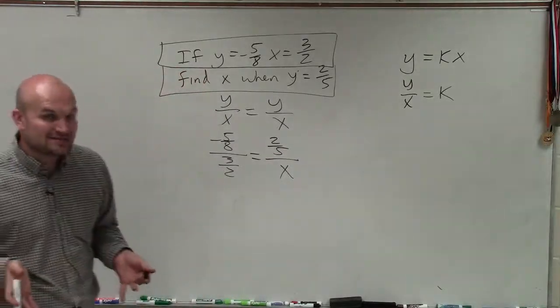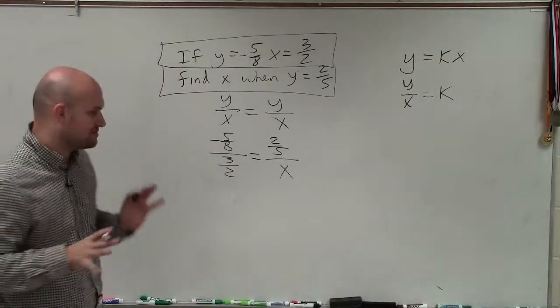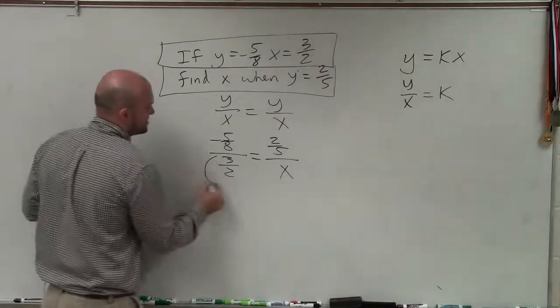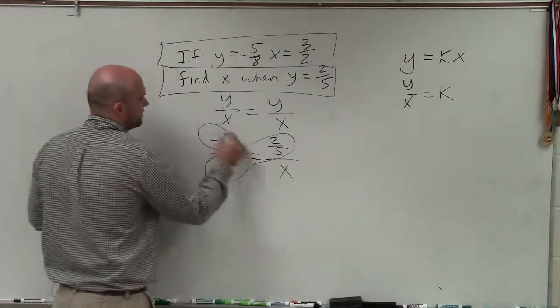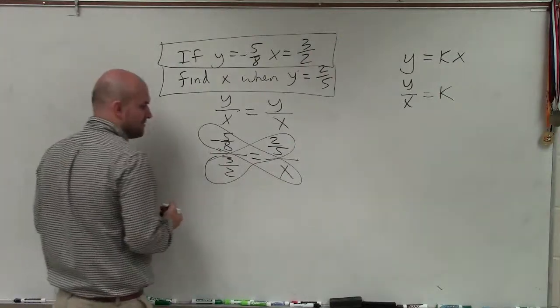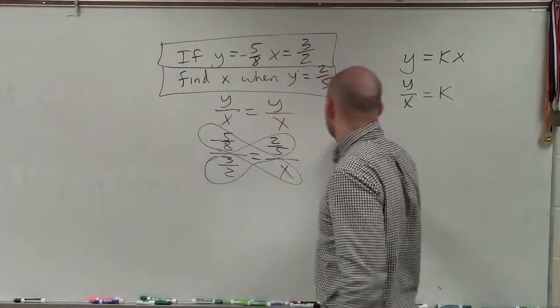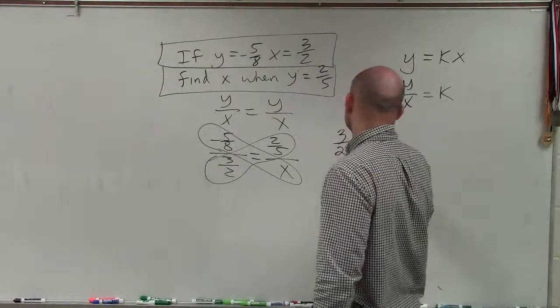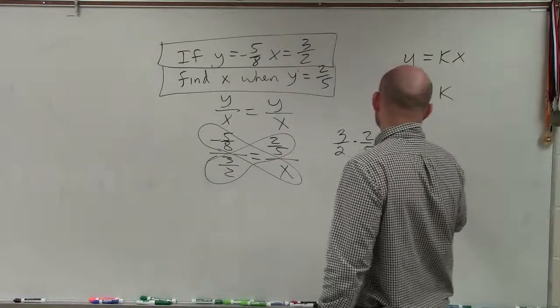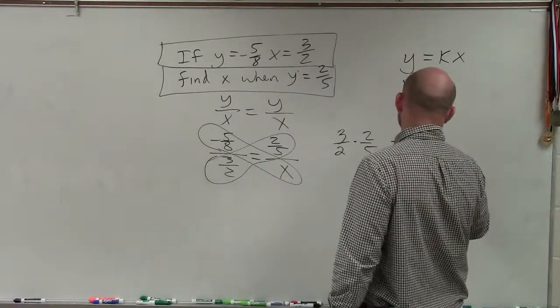Now, I know there's a lot of fractions going on, but don't be deterred. Just remember, when we're applying the cross product, we're solving a proportion. We can just apply the cross product. So here, I have 3 halves times 2 fifths is equal to negative 5 eighths times x.